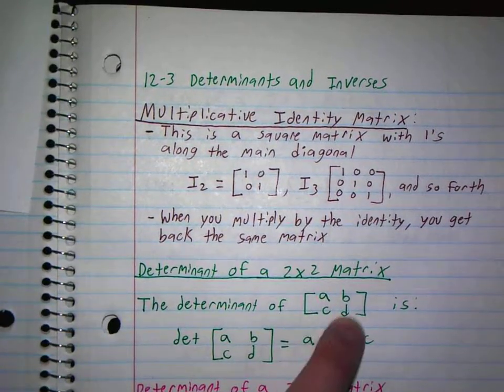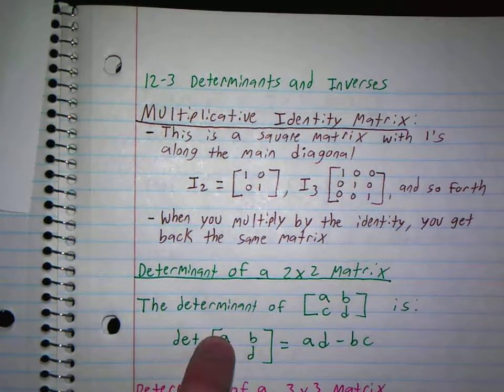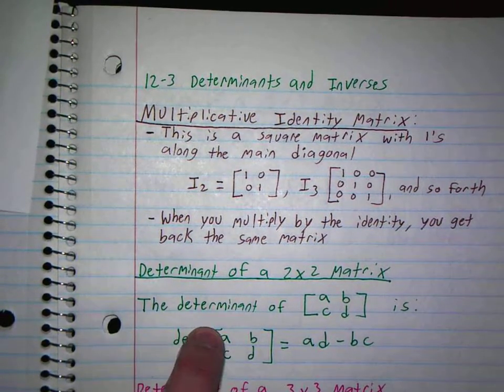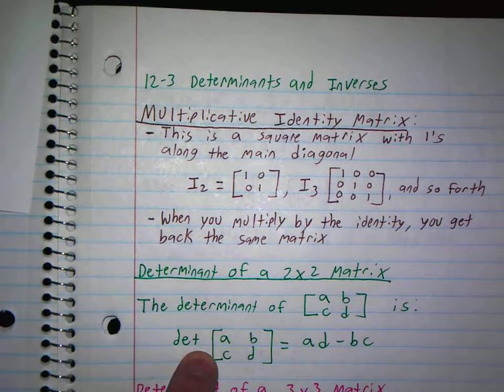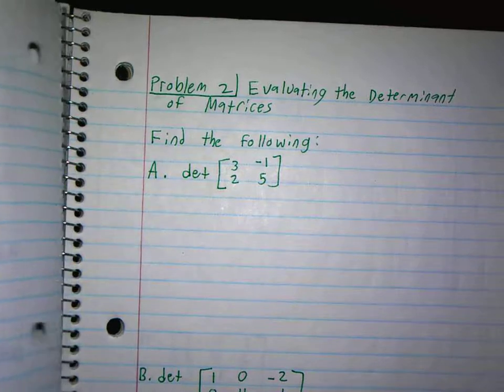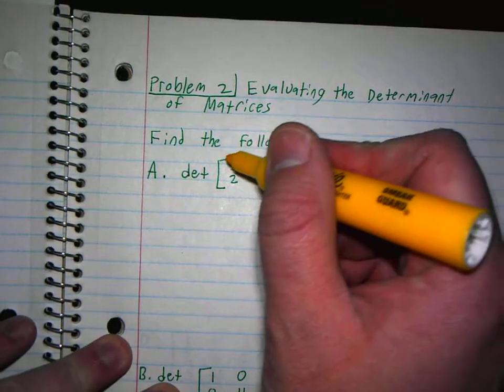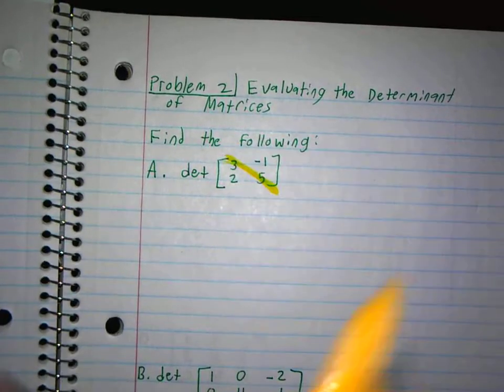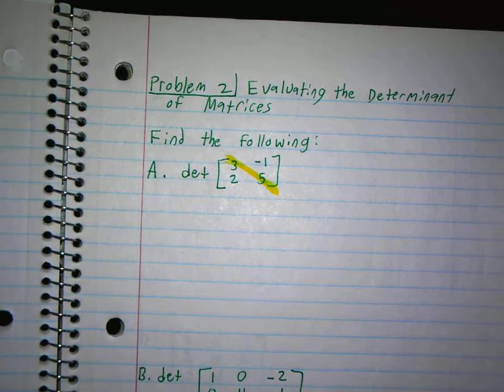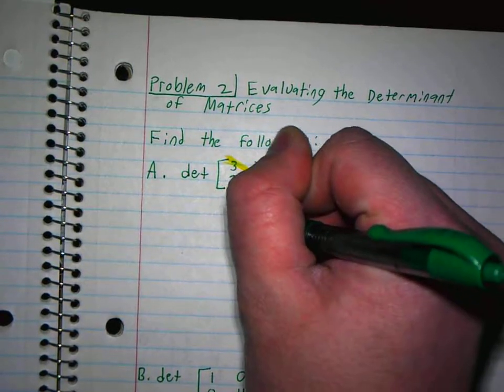The formula for a 2 by 2 matrix to find the determinant is if you have ABCD, you take AD minus BC. So you take these two minus these two. It's very simple. So I'm going to take 3 times 5, which is 15.